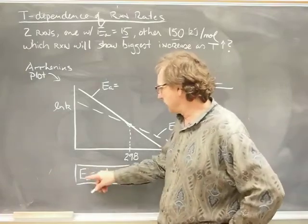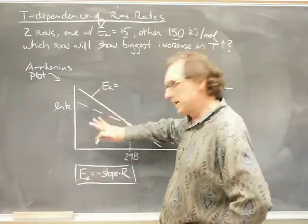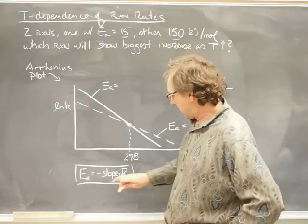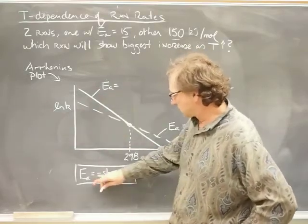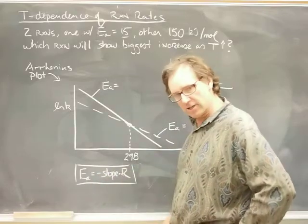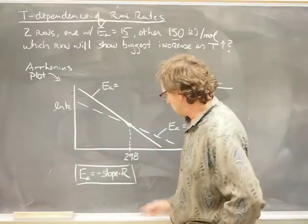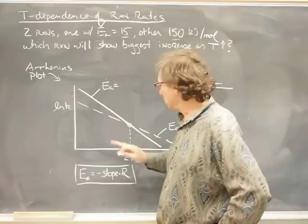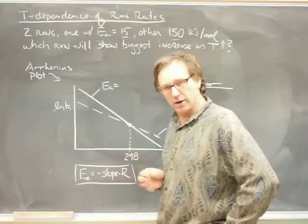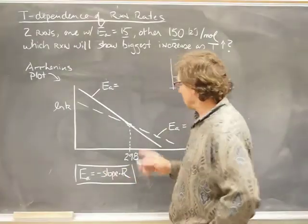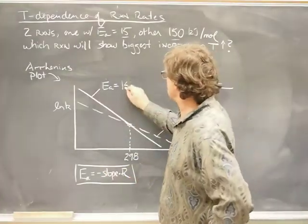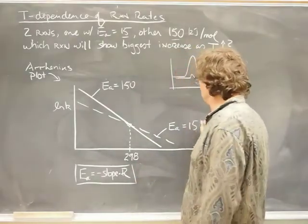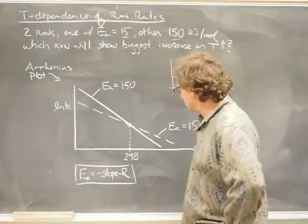Here's the way I think through this problem. I know that the energy of activation is related to the slope of an Arrhenius plot curve. It's equal to the negative of the slope times the gas constant. So, that means that a steeper slope in an Arrhenius plot corresponds to a reaction with a bigger energy of activation. So, that means this solid curve, that must be the 150 kilojoule per mole case and that must be the 15 kilojoule per mole case.